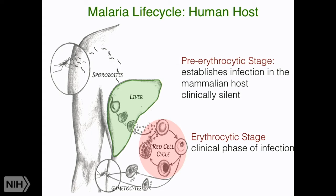Sporozoites are inoculated by infected mosquitoes. They go to the liver and infect hepatocytes. A sporozoite infecting a hepatocyte will then develop, change form, and multiply into thousands of merozoites, which then leave the hepatocyte and initiate the blood stage of infection. In the blood stage, the merozoites infect blood cells, grow, multiply, and then infect new red blood cells. These iterative cycles of replication give rise to high parasite numbers and therefore clinical disease.